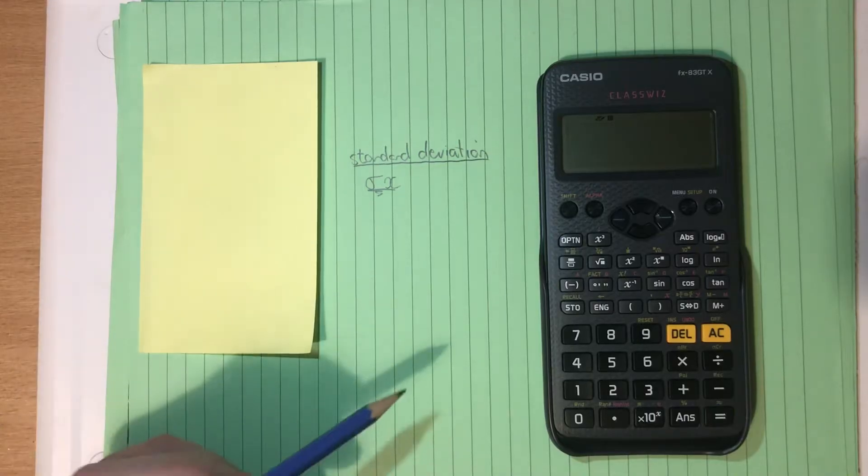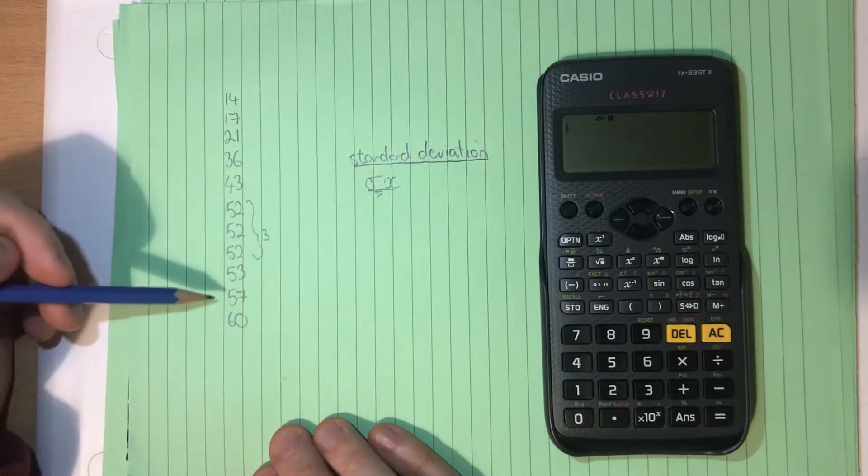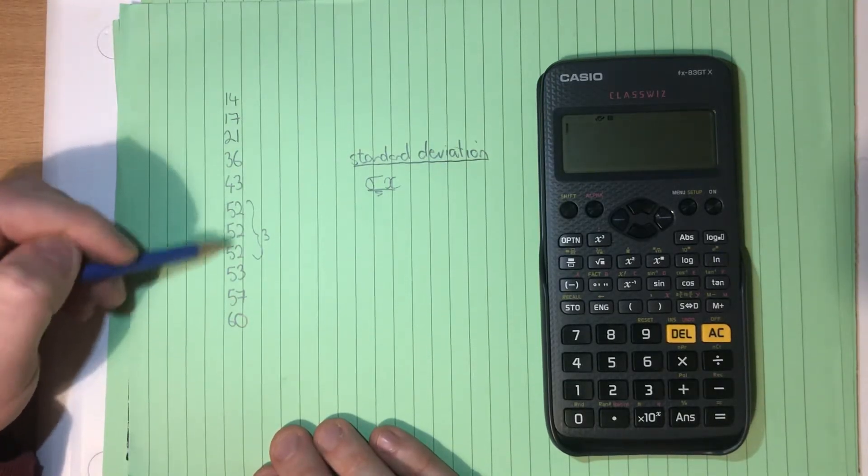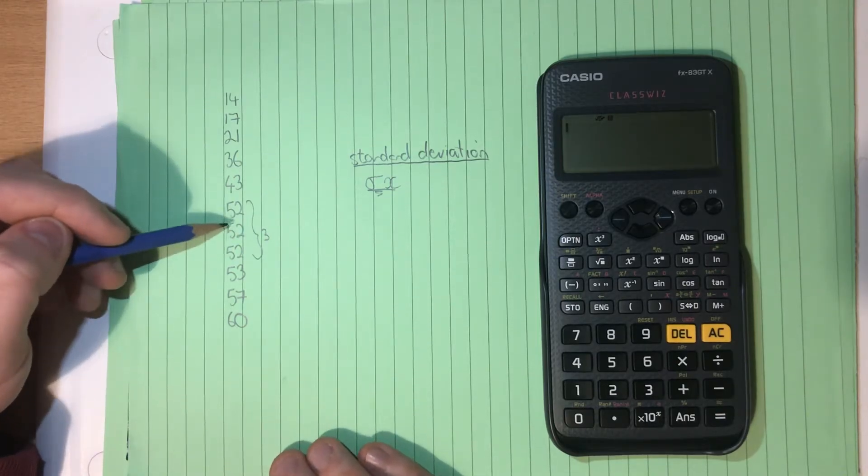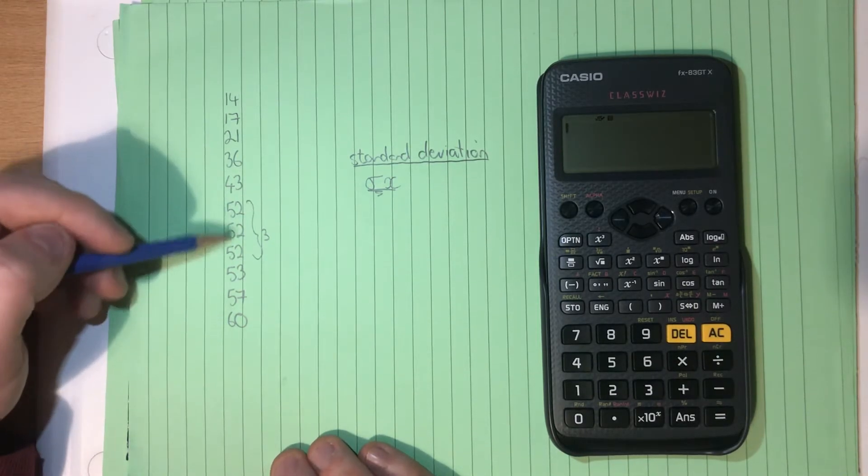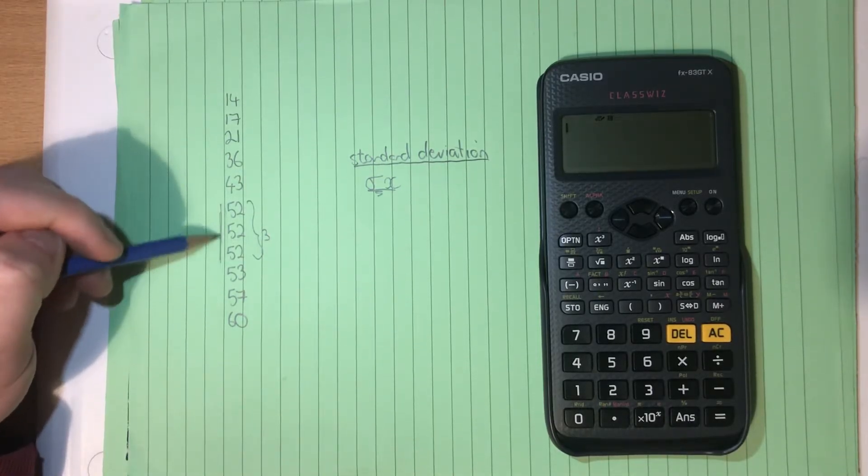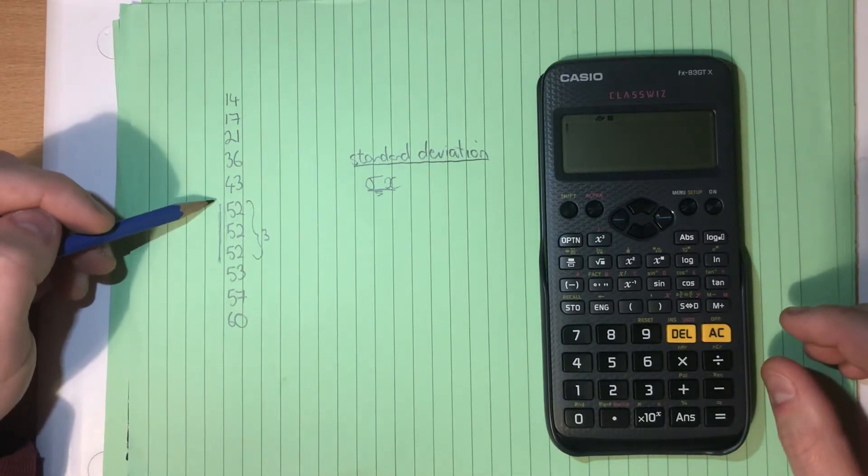So let's get into it straight away. We're going to find the standard deviation of this list of numbers here. And we notice before we get started that there's three number 52s. So we're going to have a slightly more complicated system to make life a little bit easier when it comes to inputting repeated data. Or indeed, if we had a frequency table, it would make life easier as well.